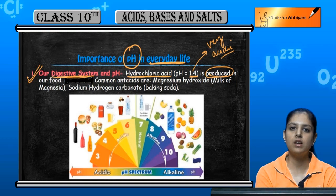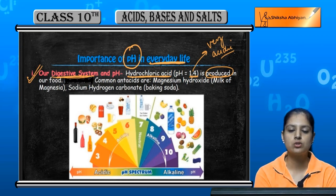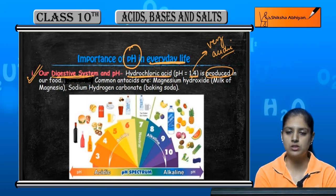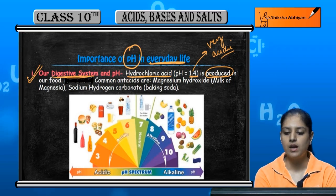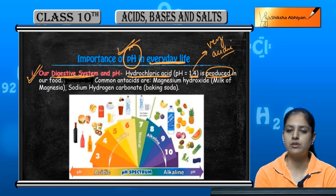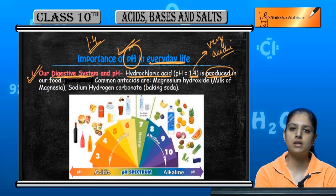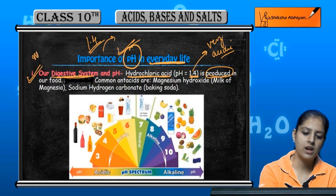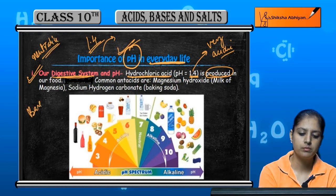If the amount of hydrochloric acid produced in the digestive system is increased, then because it is acidic, it will cause harm. Because of hydrochloric acid production, there can be harmful effects in our body. So we use pH to balance it. If the hydrochloric acid produced is around pH 1.4, we will neutralize it by using a base.